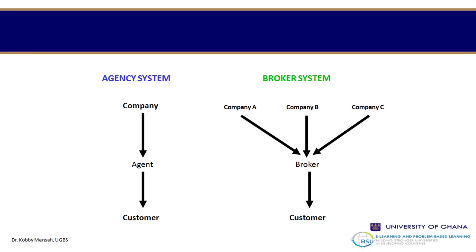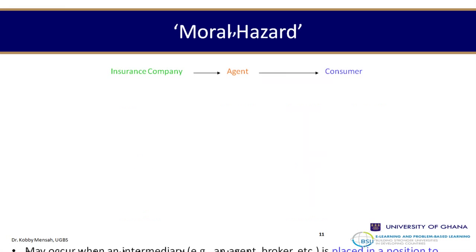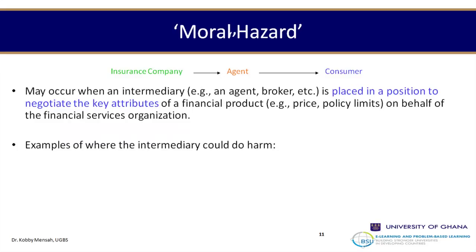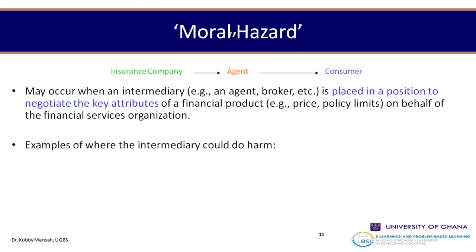Looking at the same diagram with agency, company, and customer relationships: one of the challenges in the distribution of financial services has been whether agents are able to discharge their duties to the benefit of the company and the customer, and to reduce the impact of adverse selection and moral hazards on the company's operations.